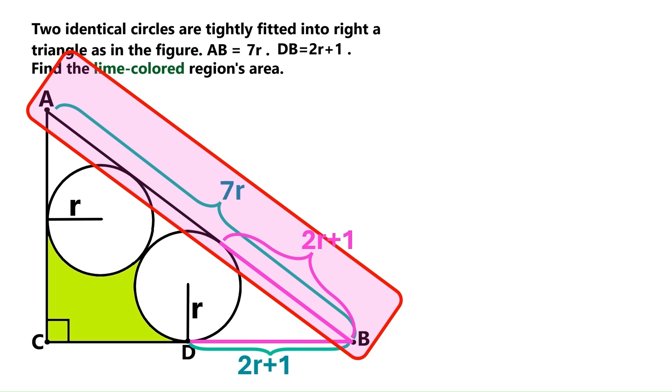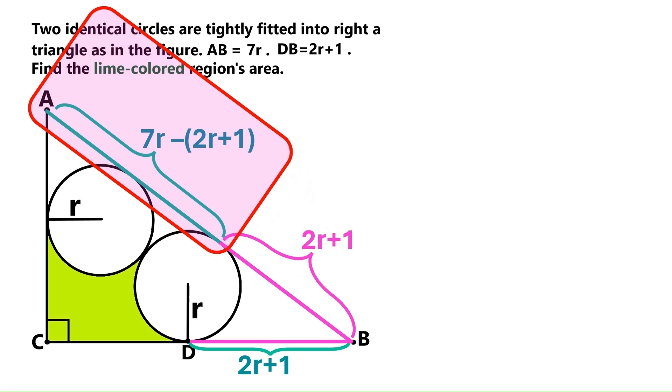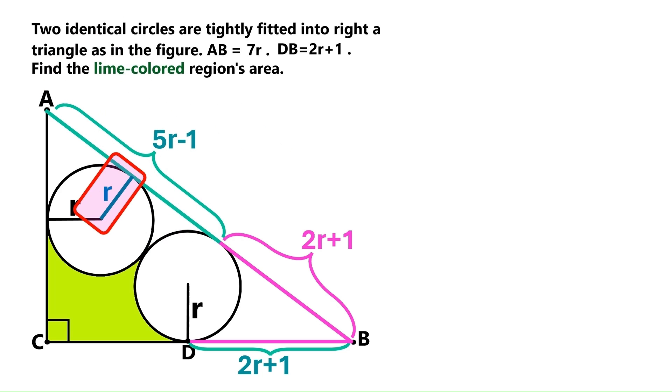We know this entire side is 7r, so this part over here has to be 7r minus 2 quantity 2r plus 1, which equals 5r minus 1. Let's now put this radius r here, and this radius r here.